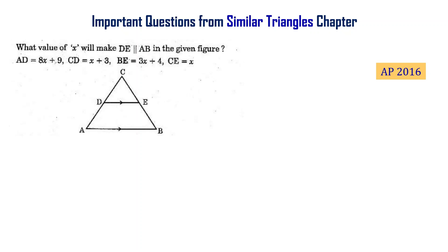What value of x will make line DE parallel to line AB in the given figure, where AD equals 8x plus 9, CD equals x plus 3, CB equals 3x plus 4, and CE equals x?